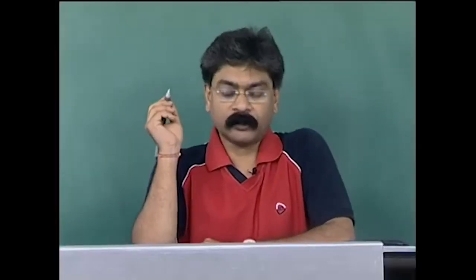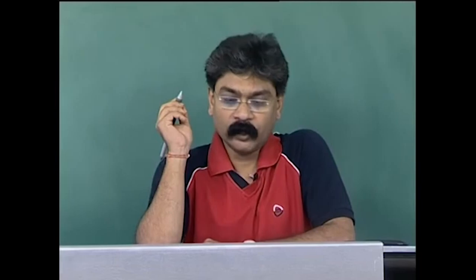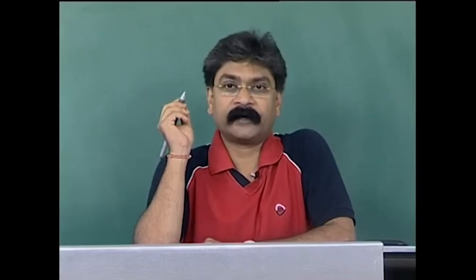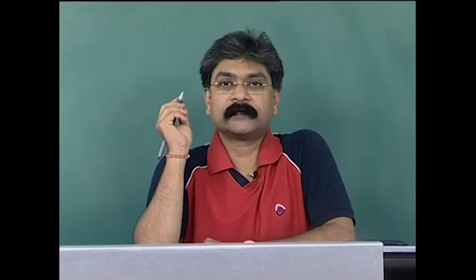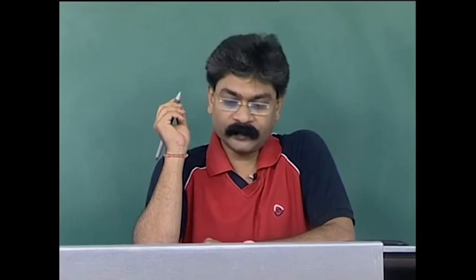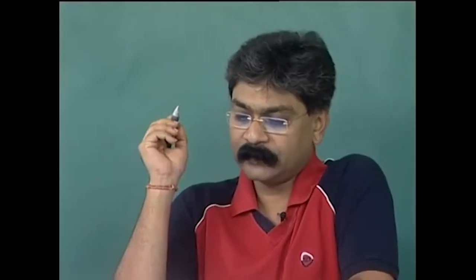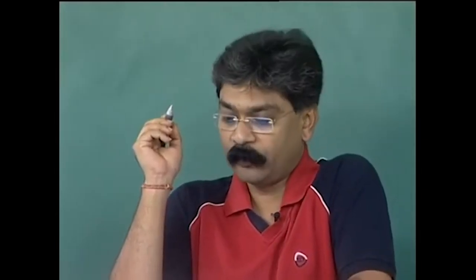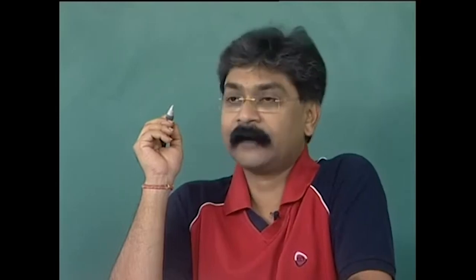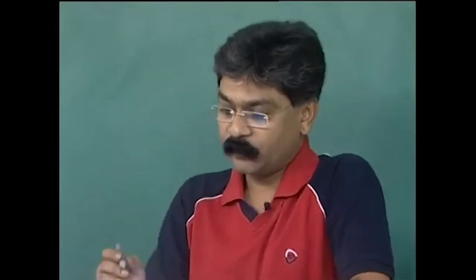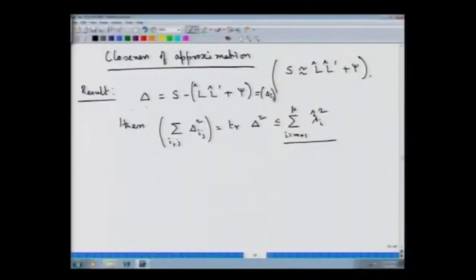In this lecture, we continue our discussion on methods of estimation of L and ψ of a factor model. In the last lecture, we discussed the principal component method for estimation of L and ψ, and we had come up to the point of looking at the closeness of approximation of S by L̂L̂ᵀ + ψ. We denote by Δ this matrix which is S minus L̂L̂ᵀ + ψ, with Δᵢⱼ being the (i,j)-th element of this delta matrix.